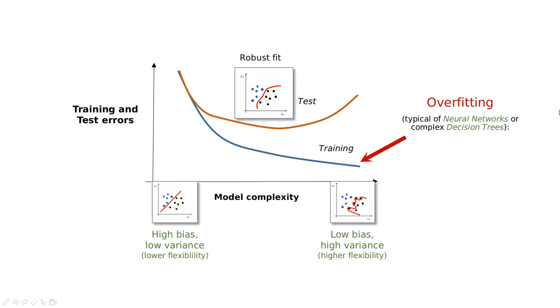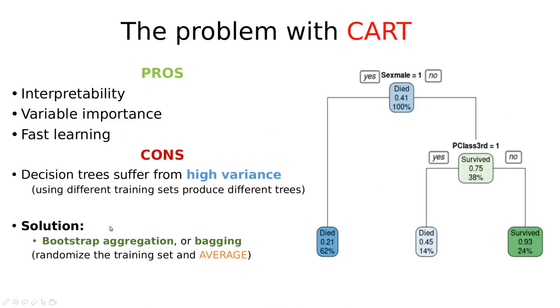There is one way to fix that in the case of decision trees, and it has to do with what is called bagging. Bagging is an acronym for bootstrap aggregation. Let me show you this with an example.